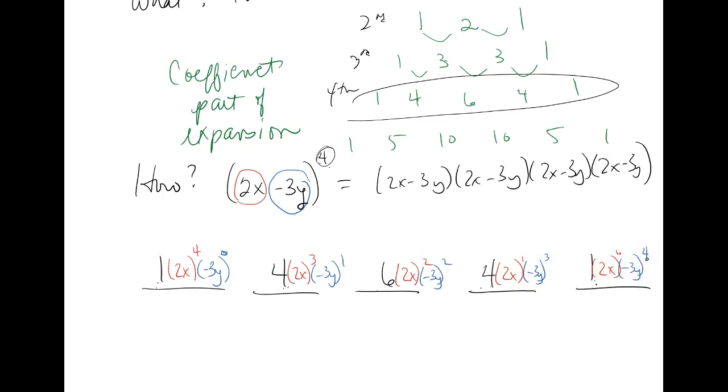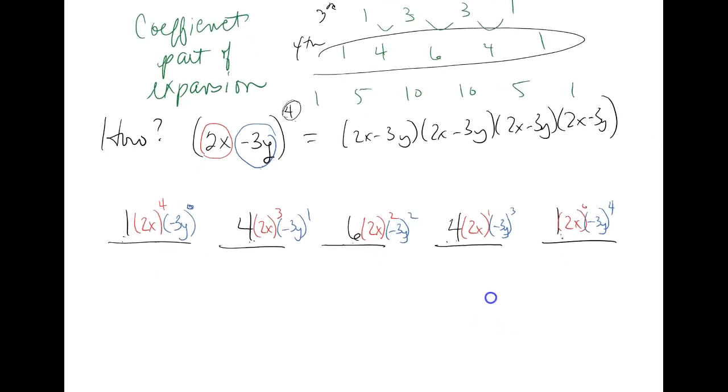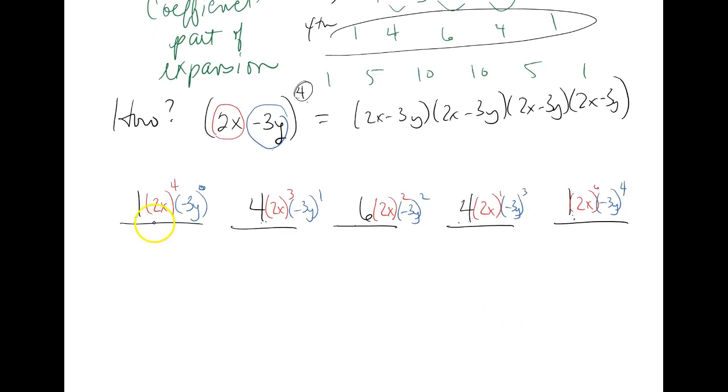negative 3y to the fourth. Okay, so this is the, you're done with the expansion. You just have to make it pretty now. Okay, now by making it pretty, the thing is this is a polynomial. So there's going to be plus and minus signs, and you want to clean it up. So you want to put all these numbers together, so I'm just going to talk through this each term.